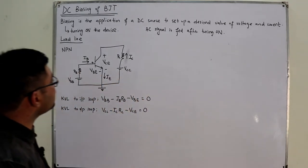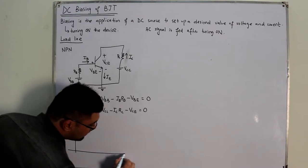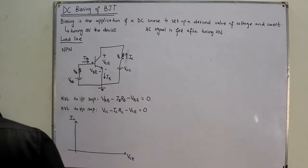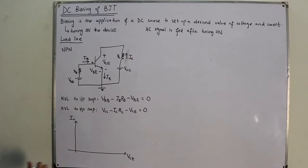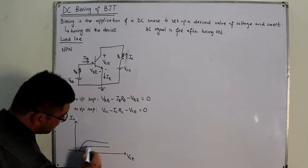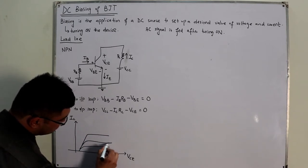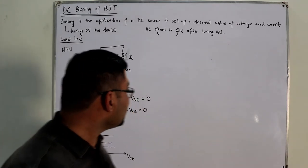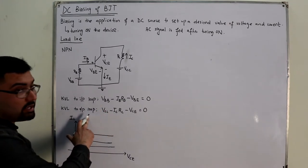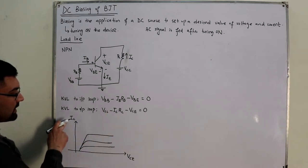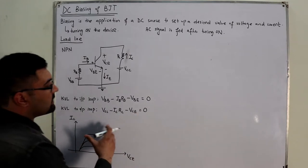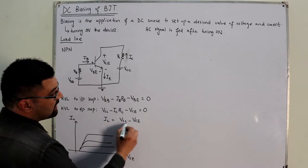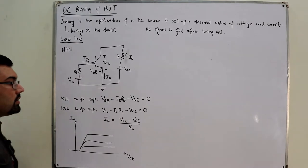The output characteristics of the common emitter configuration are I_C versus V_CE curves for different values of I_B. To draw the load line, we use the output KVL equation. The y-axis is I_C and the x-axis is V_CE, so from the KVL equation we can write: I_C = (V_CC − V_CE) / R_C. This is the equation of a straight line.